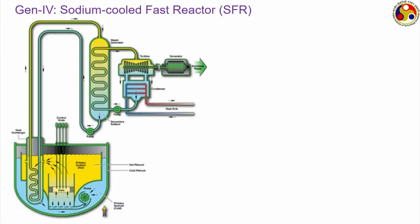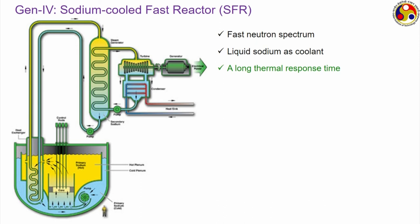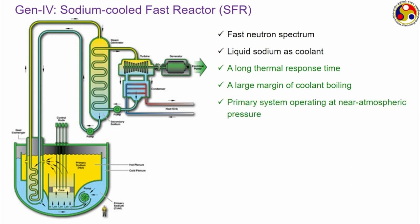The sodium cooled fast reactor (SFR) — as the name suggests a fast reactor with liquid sodium as coolant — has a very long thermal response time so controlling is very easy. The temperature range over which the coolant can be used is quite large, with the primary system operating at near atmospheric pressure. A secondary circuit which generally is a steam power plant is needed — liquid sodium transfers heat to water in a steam generator, producing steam that goes to the turbine and condenser in a normal Rankine cycle. Its thermal efficiency is very high in the range of 40 percent, high compared to most generation 2 reactors and even most generation 3 reactors.